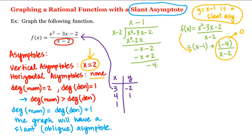When x equals 1, we get 1² which is 1, minus 3 times 1, so 1 minus 3 is negative 2, minus 2 is negative 4. The denominator is 1 minus 2, which is negative 1. So the ratio is positive 4. When x equals 0, we have 0 minus 0 minus 2, so the numerator is negative 2. The denominator is 0 minus 2, which is also negative 2, so the ratio is 1.